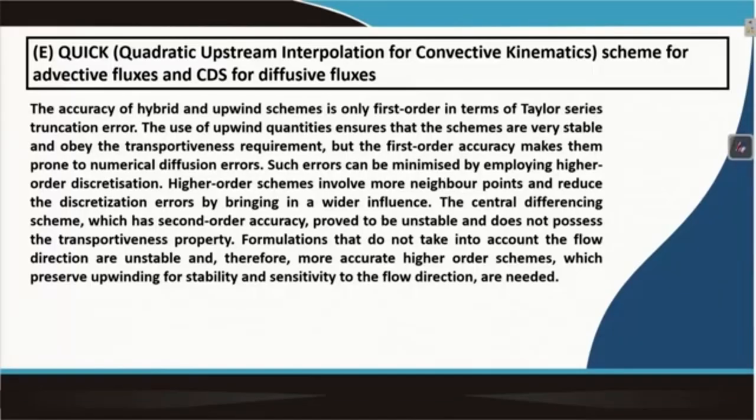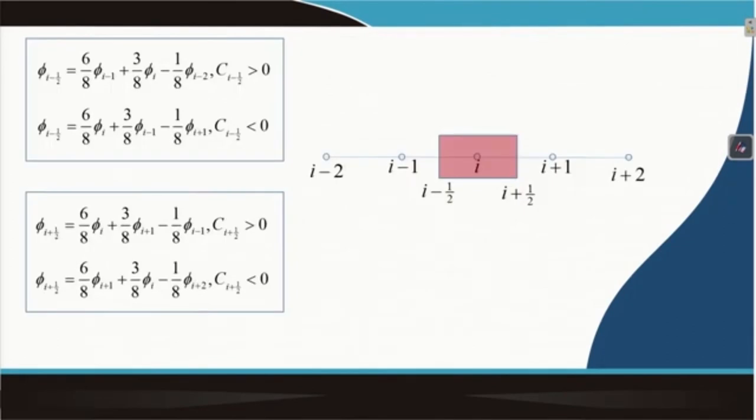With this we come to the end of this module. In the subsequent module we are going to look at the incompressible 2-dimensional Navier-Stokes equations, where we would not assume the velocity field but would try to find ways and means by which the velocity field can be solved. We will then look at the distribution of pressure and velocity in the flow field, and also at derived properties like stream function and vorticity in the flow field. Thank you.